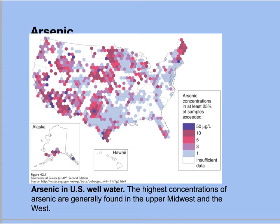Indicated on this illustration are high concentrations of arsenic found in well water throughout the country. The Midwest and West show particularly elevated levels. Arsenic in drinking water is associated with cancers including skin cancer, lung cancer, and cancers of the kidneys and bladder. These illnesses take 10 years or more of exposure to develop. Even low concentrations found in household wells — at parts per billion — can cause severe health problems.